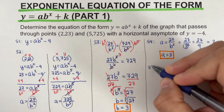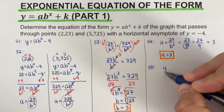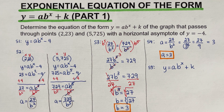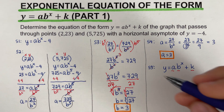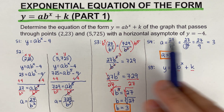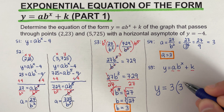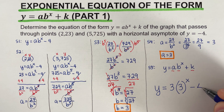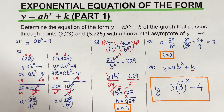Step 5: write the equation of the form y equals a·b^x plus k. Plugging in our values — a equals 3, b equals 3, and k equals negative 4 — the final equation is y equals 3 times 3 raised to the power x, minus 4. This is the equation of the graph passing through those two points.